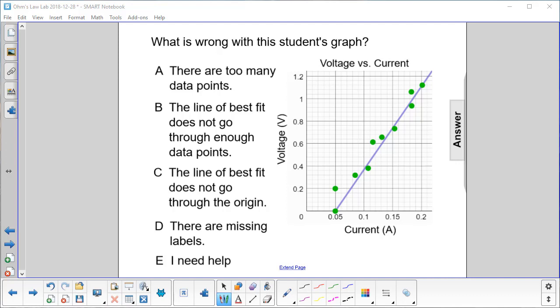What is wrong with this student's graph? There are too many data points. No, you can never have too much data in physics.